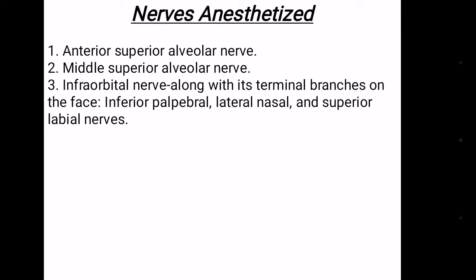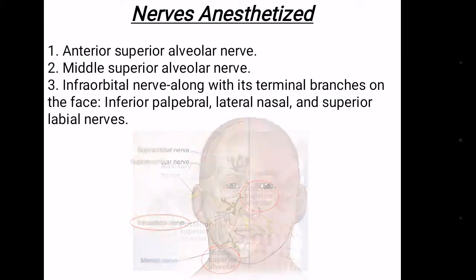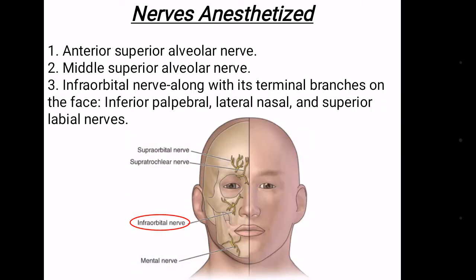The nerves which are anesthetized are the Interior Superior Alveolar Nerve, Middle Superior Alveolar Nerve, and Infraorbital Nerve, along with its terminal branches on the face: the Inferior Palpebral, Lateral Nasal, and Superior Labial Nerve.